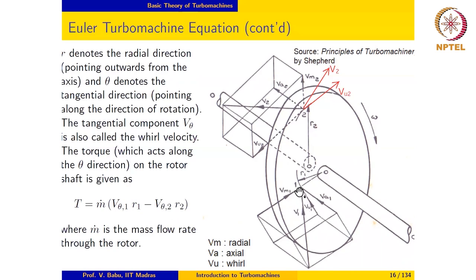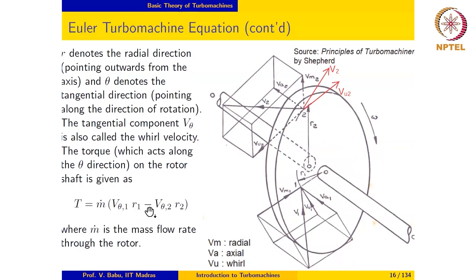It should be noted that the tangential component of velocity at inlet, Vθ1, is in the same direction as the blade speed in the velocity triangle shown. Also note that Vθ2 in the black velocity triangle is in the direction opposite to the blade speed, while the red velocity triangle shows Vθ2 in the same direction as the blade speed. The sign convention is: if Vθ2 is in the same direction as Vθ1 with respect to blade speed, it is positive; if in the opposite direction, it is negative. This must be accounted for in real calculations.